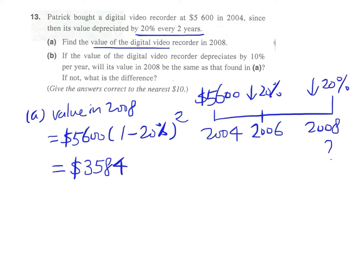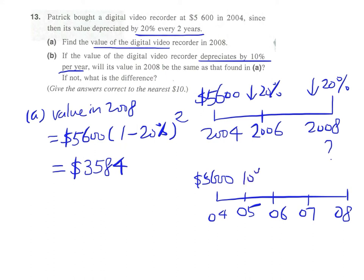In part B, the question changes a little bit. If the value of the recorder depreciates by 10% every year, then the story will be different. If we draw the timeline again, there will be a total of four times of depreciation from 2004 to 2008: one, two, three, four.